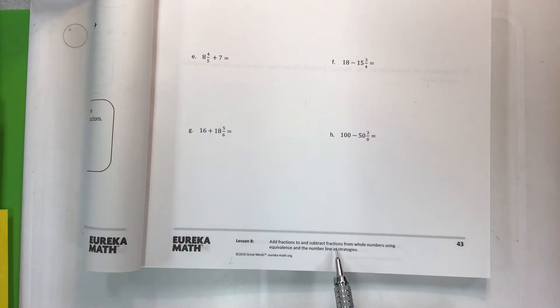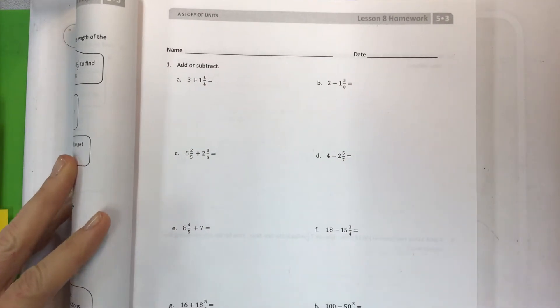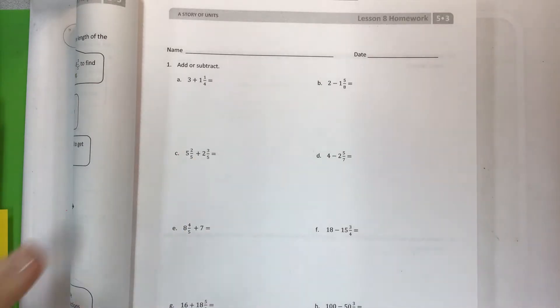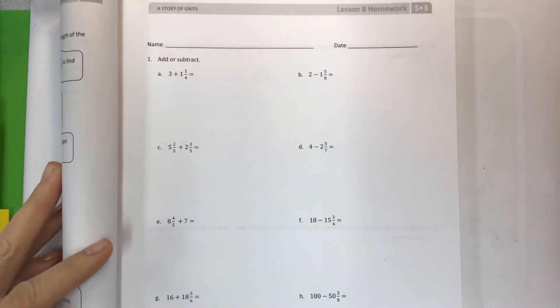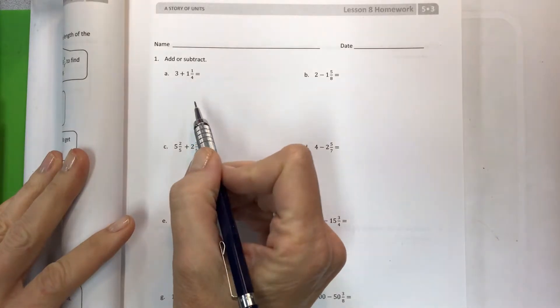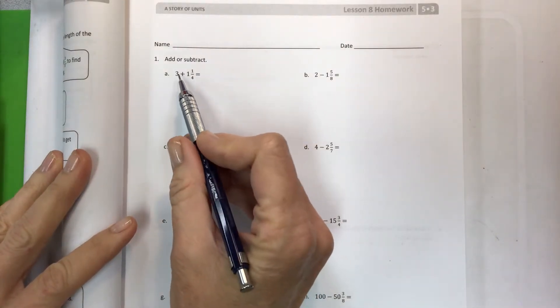At the bottom of the page we have the strategy for the day, or the objective, which is to add fractions to and subtract fractions from whole numbers using equivalents and the number line as strategies. But with the strategy of the number line, the directions say add or subtract, so I'm not going to force you to do any one thing. I'll just recommend doing what you think is best for you — some students love the number lines, others really love the equivalents.